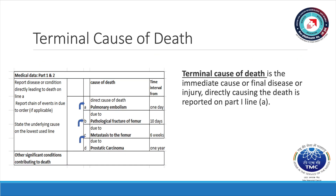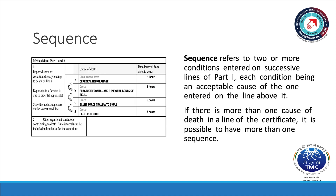Terminal cause of death is the immediate cause — the final disease or injury directly causing the death — and is reported on Part 1, Line A. Sequence refers to two or more conditions entered on successive lines of Part 1, each condition being an acceptable cause of the one entered on the line above it. If there is more than one cause of death on a line of the certificate, it is possible to have more than one sequence.